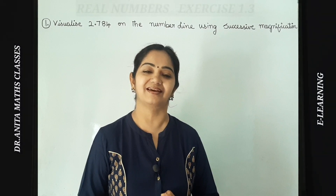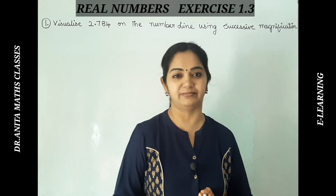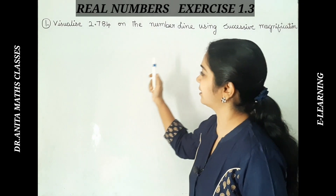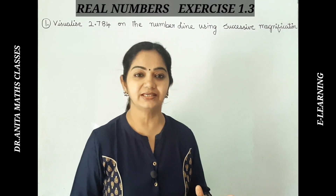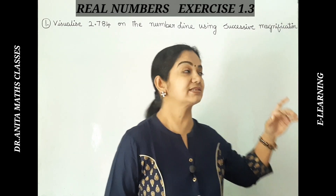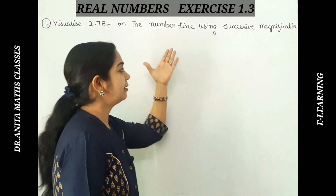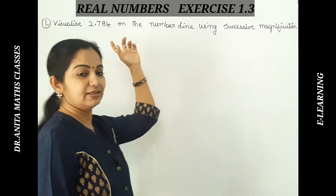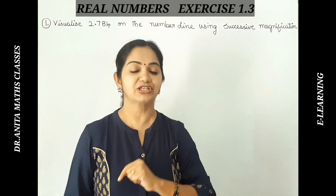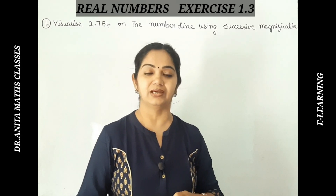Welcome back to the mathematics class. Today I'm going to discuss Exercise 1.3 of the Real Numbers chapter of Class 9. We will be starting this exercise today — there are only two problems in this exercise. The topic is visualizing decimal numbers on a number line using a method called successive magnification. We have previously done representing rational and irrational numbers on the number line in Exercise 1.1 and 1.2.